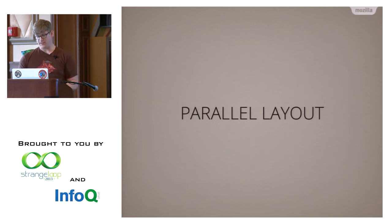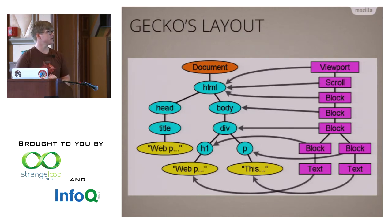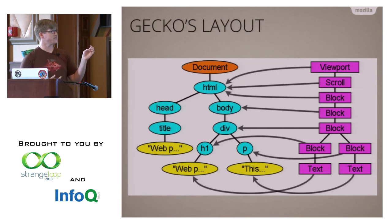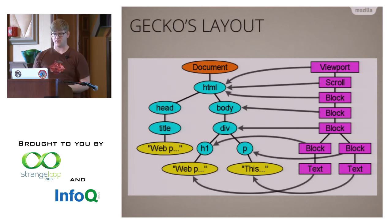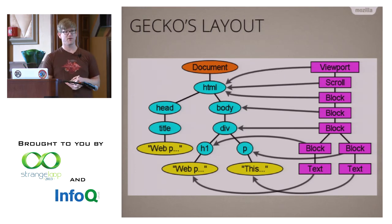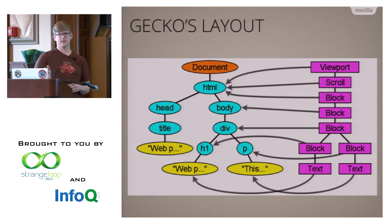Now let's talk about parallel layout. Before we can, we should start with how layout works in current browsers. Current browsers — and Servo has this too — have a parallel data structure. In Gecko it's called the frame tree, in WebKit it's called the render tree, and in Servo we call it the flow tree. It links back to the DOM and represents the containing blocks of the page. When you want to calculate layout information, you start at the top, and the way Gecko does this is essentially a C++ virtual function call that talks to all its children and says 'go do your layout,' and the children talk to their children, and so on.